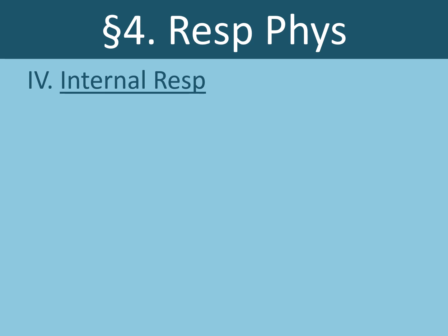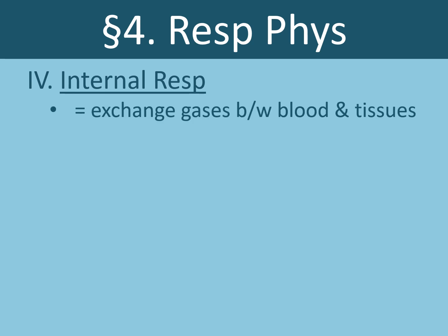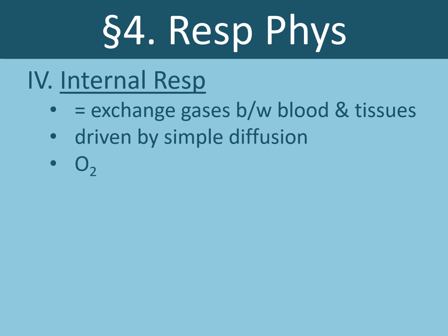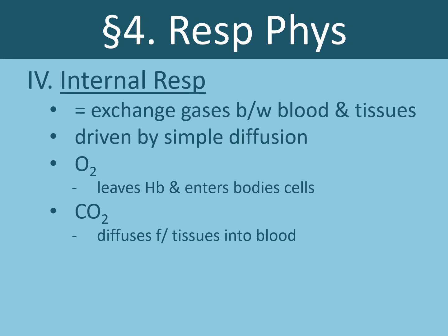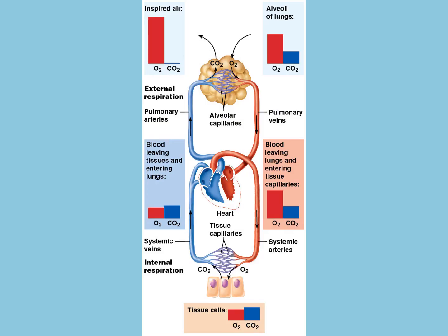The final component of respiration is internal respiration — the exchange of gases between our blood and tissues. Like external respiration, internal respiration is driven by simple diffusion. Oxygen leaves the hemoglobin molecules from our red blood cells and enters into the body's cells, providing those cells with oxygen to help drive the production of ATP. CO2 diffuses from the tissues of the body into the blood, where it dissolves in the blood plasma and is converted to bicarbonate ions in our red blood cells.